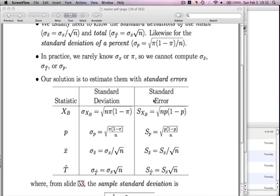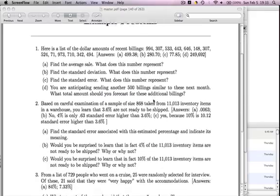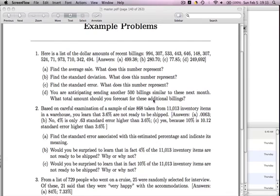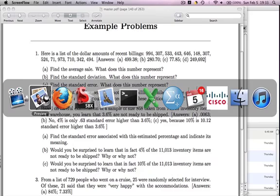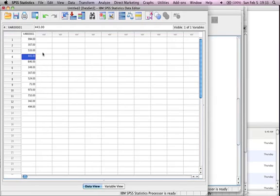Let's go look at a couple quick problems. Here's a list of dollar amounts from recent billings. We're to find the average, find the standard deviation, and find the standard error. The easiest way to do this is to go over to SPSS. I've typed those 13 numbers in.